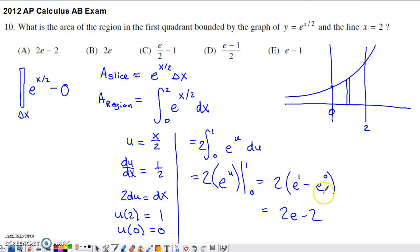So evaluate at the upper, evaluate at the lower, e to the 0 is 1. So if I have e to the 1 minus 1 and I distribute this 2 back in, I end up with option A.